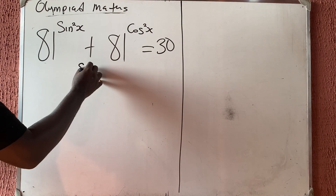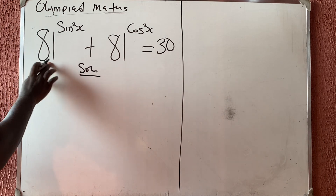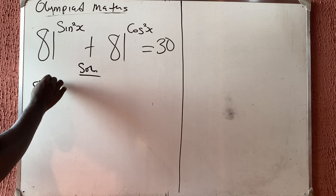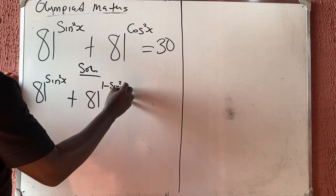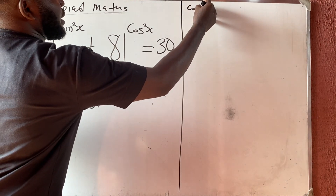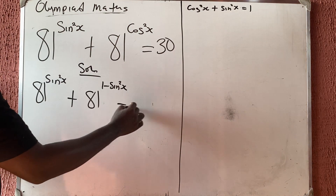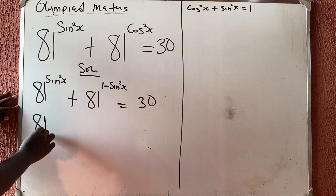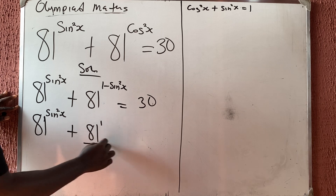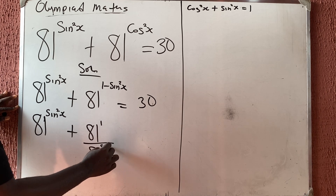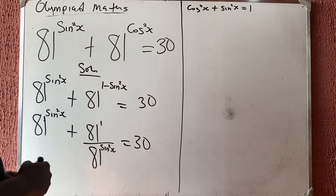For the solution, let us break it down. We have 81 raised to power sine squared x plus 81 raised to power cosine squared x, where cosine squared x acts as 1 minus sine squared x — because cosine squared x plus sine squared x equals 1. So we get 81 raised to sine squared x plus 81 raised to power 1 over 81 raised to power sine squared x equals 30, since the minus in the exponent indicates division by indices rules.